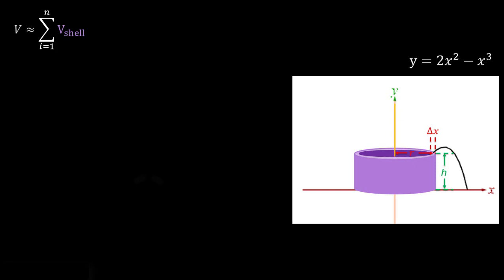Now finding the volume of this is the trickiest part of the shell method. So imagine that we sort of cut this open. We're going to do some surgery on our shell here. So we break out the scissors and we're going to cut along this dashed line here.